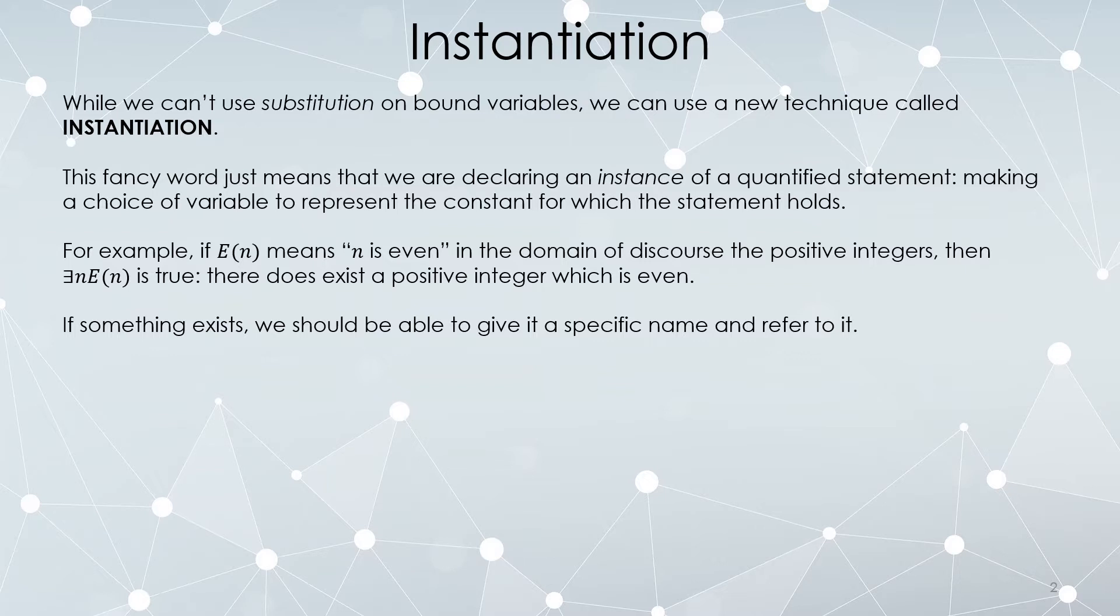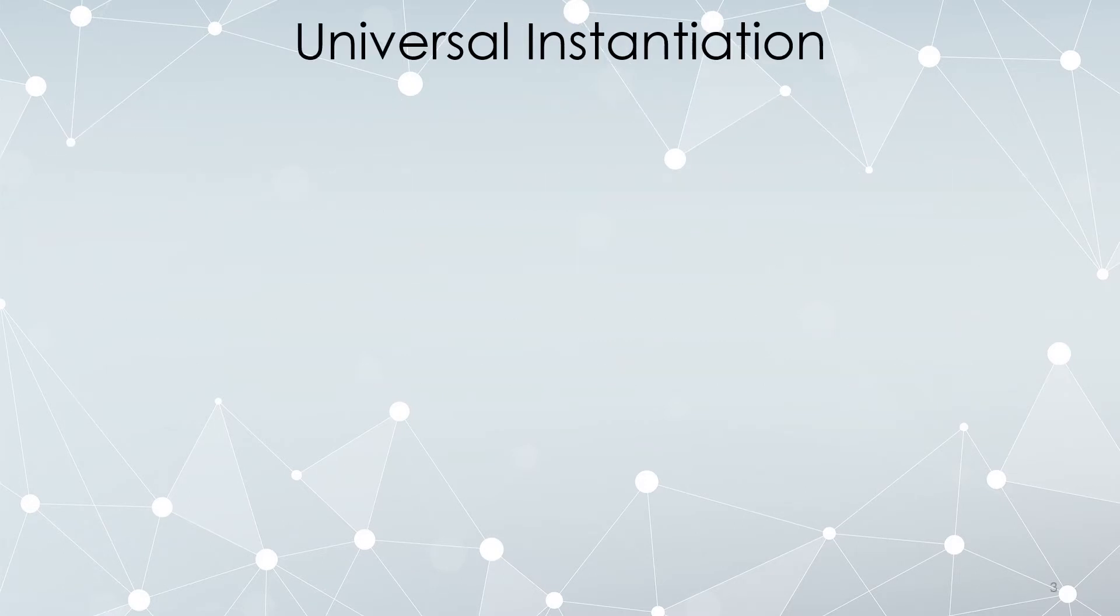If things exist, we can give them names. And there are two different versions depending on which quantifier we're using. Unsurprisingly, there's universal instantiation if we have universal quantifiers.